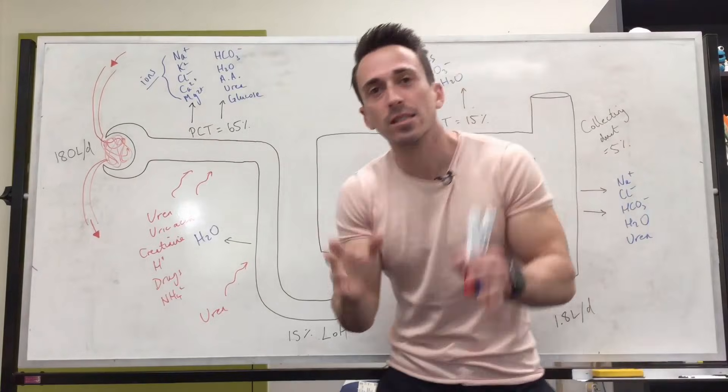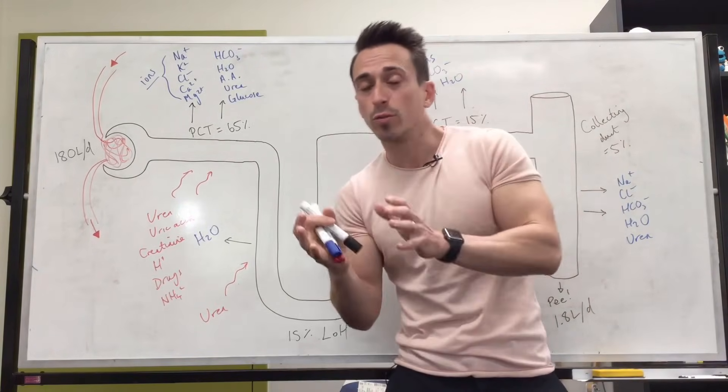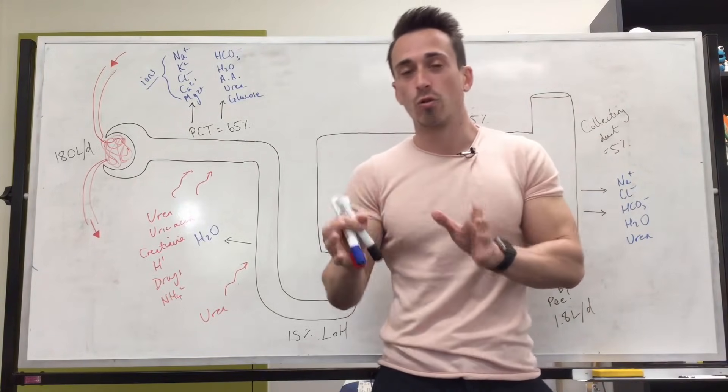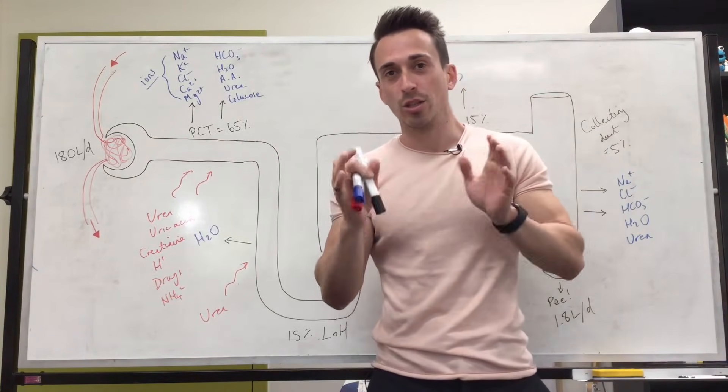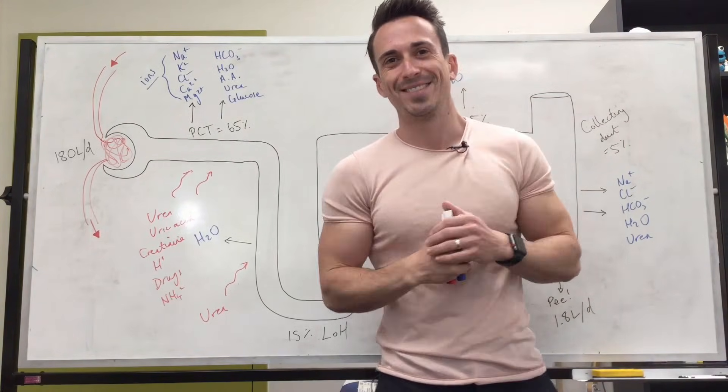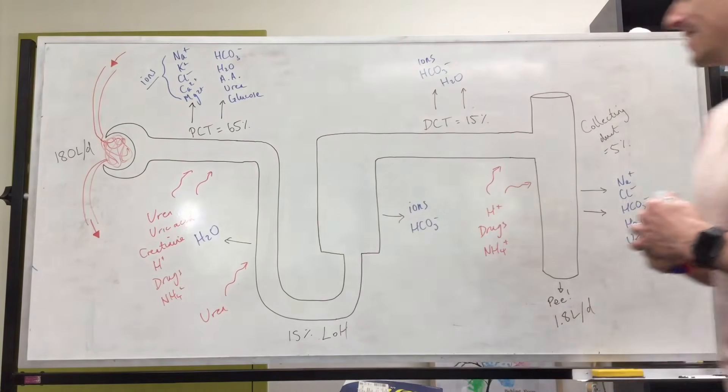So we filter most things into the tubules, reabsorb nearly 100% back into the body, and secrete very specific products back into the tubules, so that overall we only pee out 1% of everything filtered. This is the process of reabsorption and secretion at the tubules.